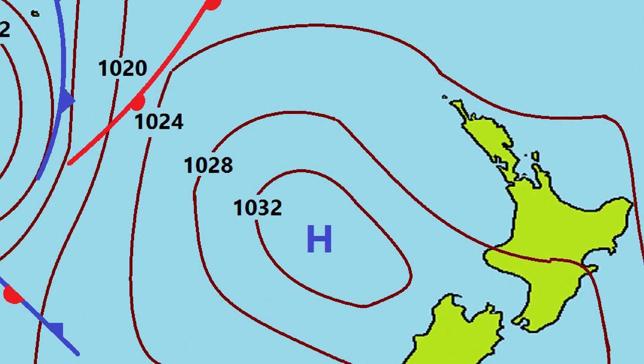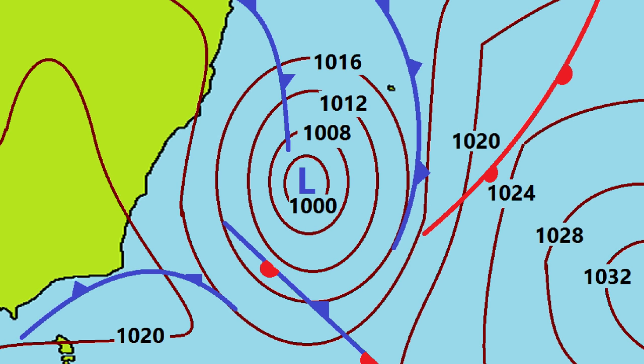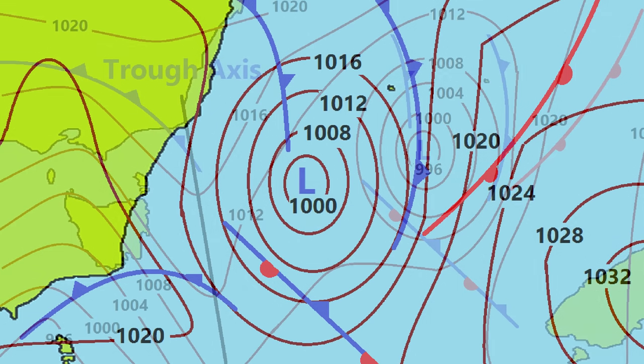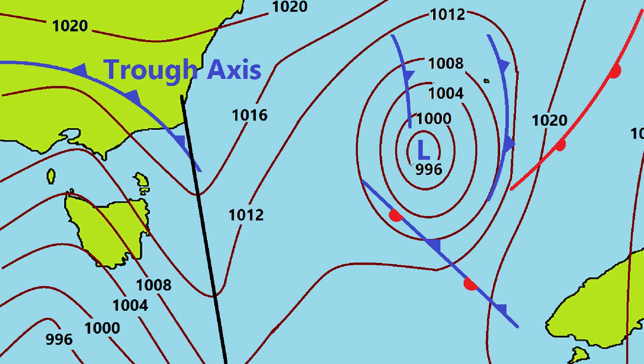High pressure systems have enclosed isobars which increase in pressure towards their centre. Low pressure systems, on the other hand, contain isobars which decrease in pressure towards the centre. When isobars make a sharp bend around the low, this bend area is called a trough.